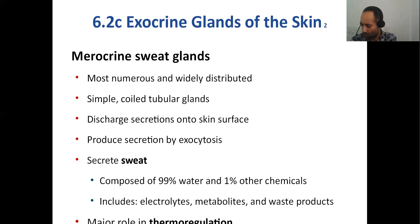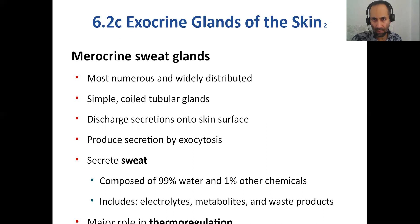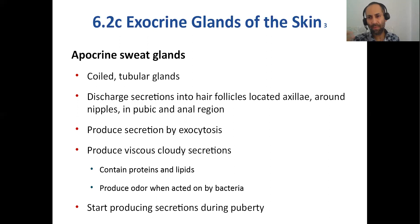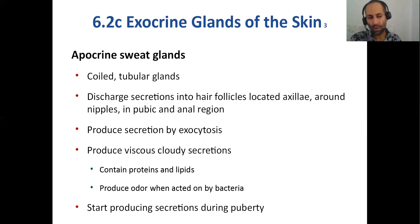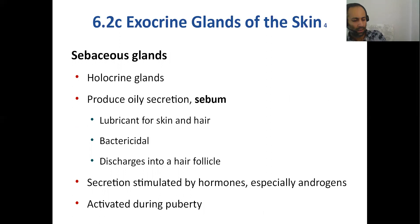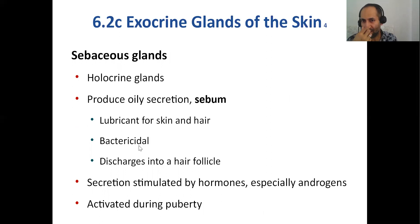Sweat glands are examples of merocrine glands — watery secretions produced by exocytosis. Sweat is mostly water — 99% water with some dissolved salts, urea, and fatty acids. Apocrine sweat glands secrete specialized sweat in your armpits, groin, and around the nipples, which has a characteristic smell because it's rich in fatty acids that bacteria metabolize. Apocrine sweat glands become active under the influence of sex hormones at puberty. Sebaceous glands — the sebum-secreting oil glands of the skin — kill bacteria and also have IgA, which kills viruses.